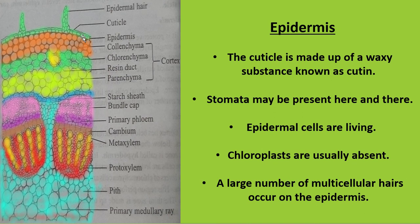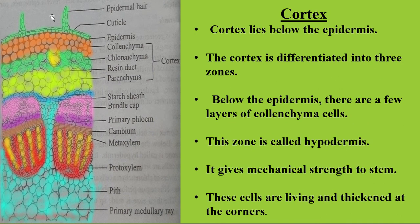The epidermal cells possess parenchyma cells which are living in nature, and chloroplast is completely absent in these cells. Chloroplast is a cell organelle responsible for the photosynthesis process. The epidermis also possesses multicellular hair outgrowths.